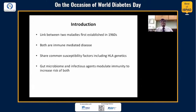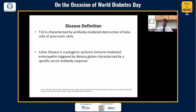It was in the 1960s that it was first understood that celiac disease and type 1 diabetes both seem to go hand in hand. Both are immune-mediated disorders and they share certain susceptibility factors including HLA. And now we are realizing that gut microbiome and infectious agents possibly modulate immunity to increase the risk of both type 1 diabetes as well as celiac disease.